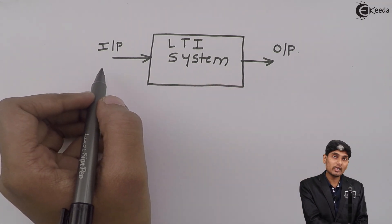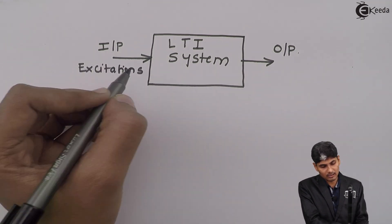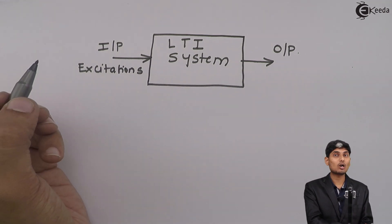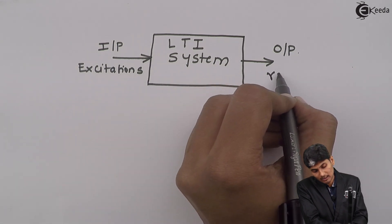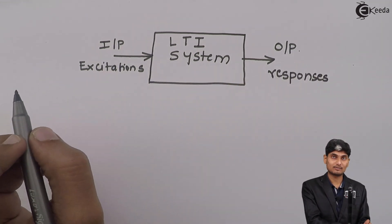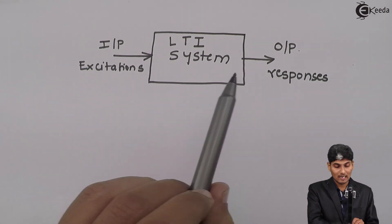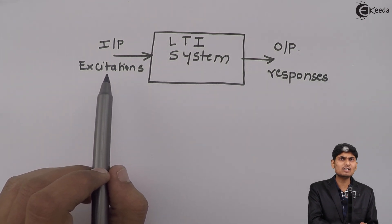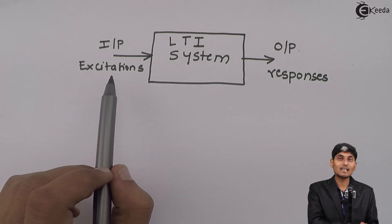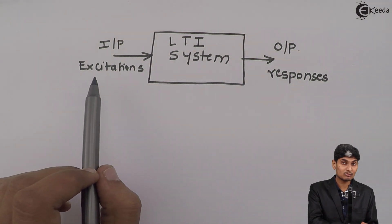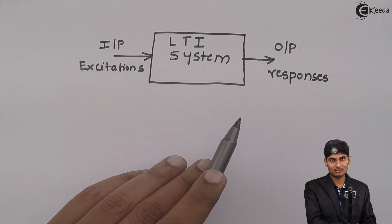When we give a known input, it is called an excitation — inputs are called excitations. When we see the output, it is called a response. So from now on, I will use output and response interchangeably, and input and excitation interchangeably. Excitation means the known input given to a system, and the output is the response given by the system.